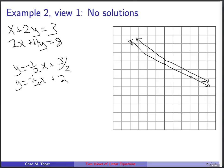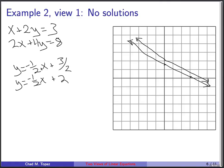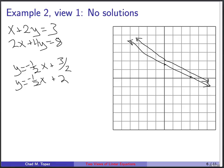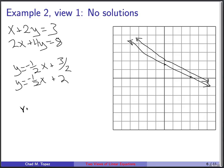Let me show you another possibility. Here are two equations: x + 2y = 3 and 2x + 4y = 8. Writing them in y = mx + b form: the first gives y = -1/2 x + 3/2, the second gives y = -1/2 x + 2. These two lines have the same slope but different y-intercepts — they're parallel, so they never intersect. This is a case where there's no solution.